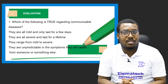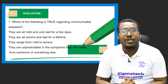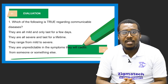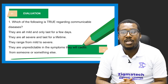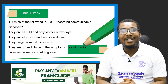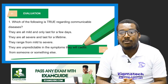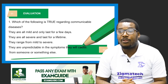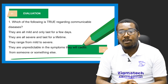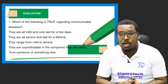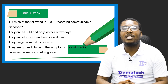Here is a take-home question for you: Which of the following is true regarding communicable diseases? A — they are all mild and only last a few days; B — they are all severe and last for a lifetime; C — they range from mild to severe; or D — they are unpredictable in the symptoms they will cause.